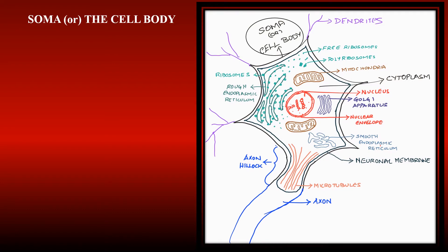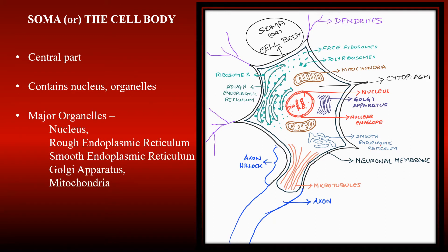The soma or cell body is the central part of the neuron. It is about 20 micrometers in diameter, containing the nucleus and the organelles. The major organelles are nucleus, rough endoplasmic reticulum, smooth endoplasmic reticulum, Golgi apparatus, and mitochondria.